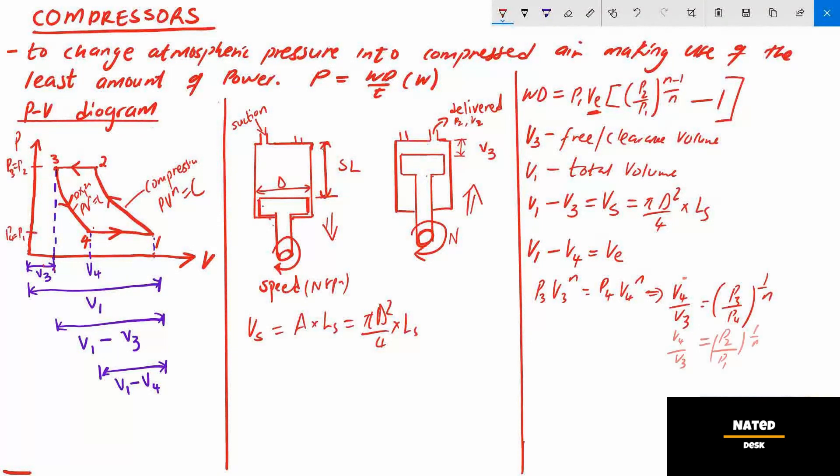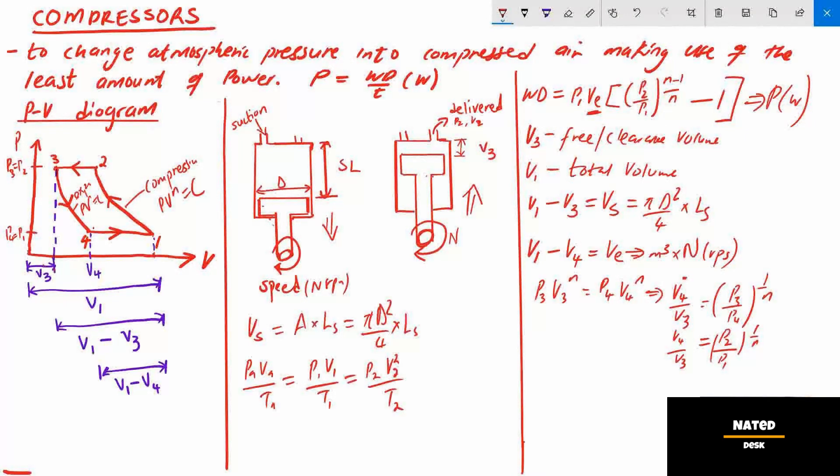Note, when the volume of air delivered by a compressor V2 is allowed to change back to atmospheric temperature and pressure, it is what we refer to as free air delivered, FAD. Thus we have the following formula: PA times VA divided by TA is equal to P1 times V1 divided by T1, is also equal to P2 times V2 divided by T2.